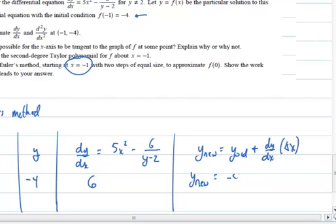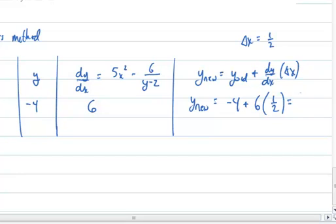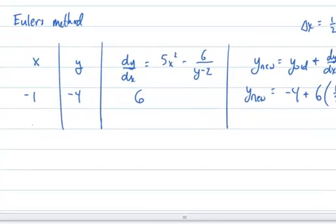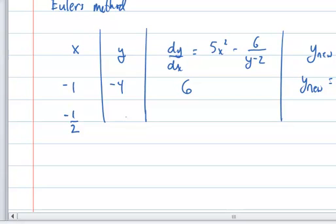So we can jump right to the first step and say that our new y value is going to equal the old one negative 4 plus 6 times our y step is going to be delta x. We're going to take two steps to get to zero so our step would be one half so that will be one half. And so our new y value is going to equal negative 4 plus 3 will be negative 1. So let me just verify that. So now we're going to have negative one half. Our new y value is going to be negative 1. Our dy dx has to be recalculated. So I'm just going to pause it while I recalculate.